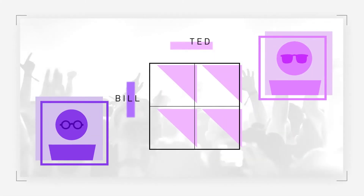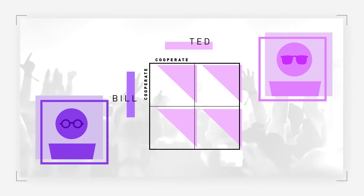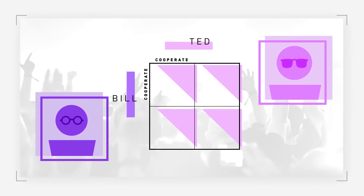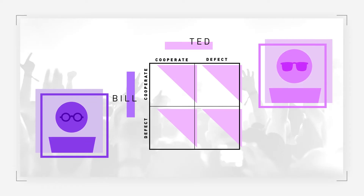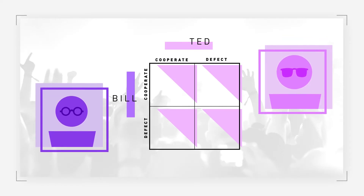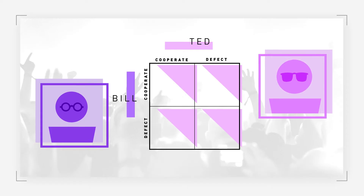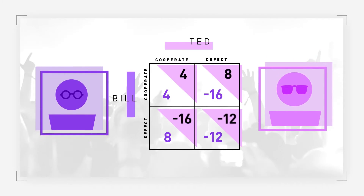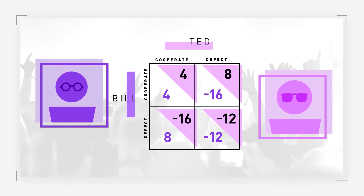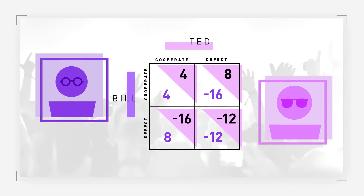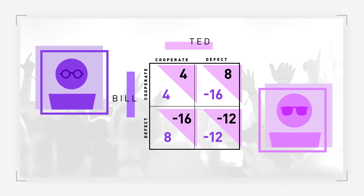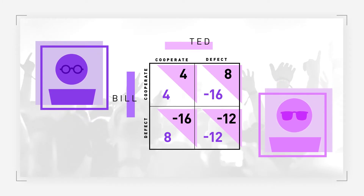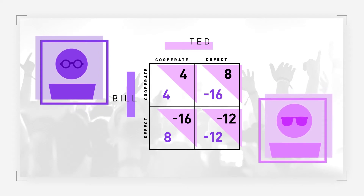A payoff matrix can help us see the incentives facing each of the suspects. Each player can choose to cooperate with their fellow suspect by remaining silent. Alternatively, they can choose to defect against their fellow suspect by confessing. The payoff or outcome for Bill is represented by the first number in each square, and the payoff for Ted is represented by the second number. The numbers illustrate the relative attractiveness of each option — the lower the number, the worse off that player will be; the higher the number, the better off he will be.